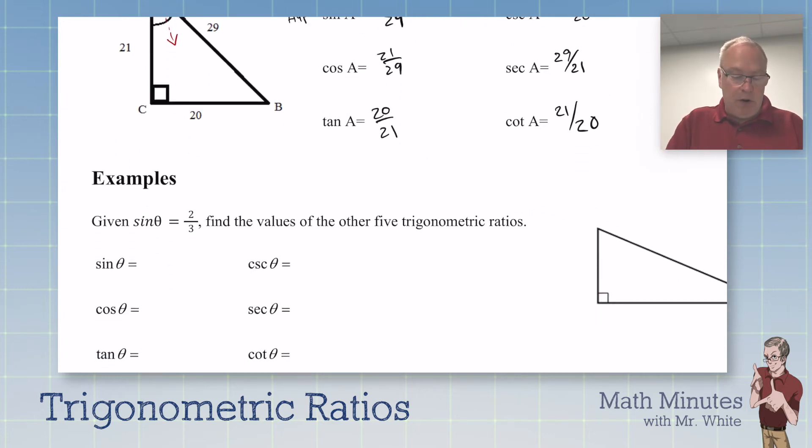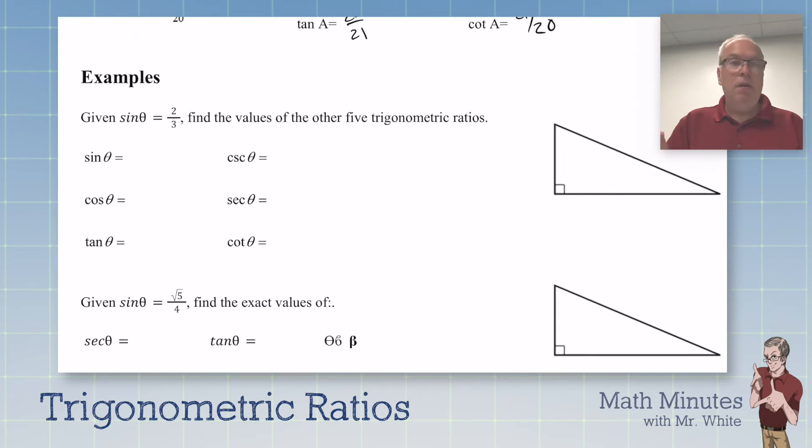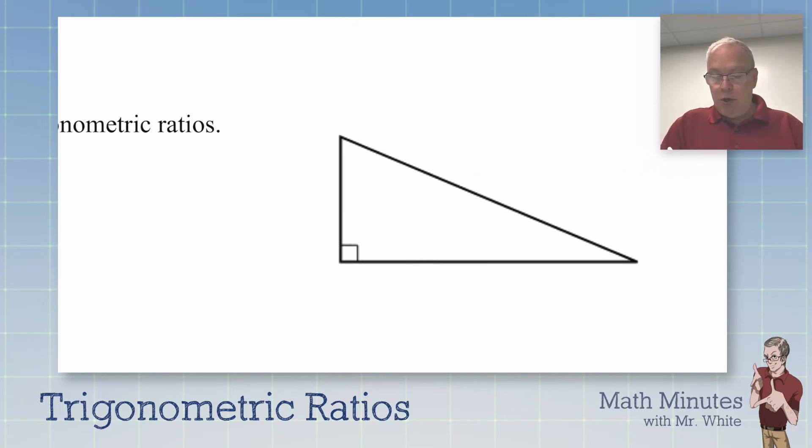So let's throw you a little bit of a curveball here. Given that sine of theta is two-thirds, find the values for the other five. We don't know where theta is, and it really doesn't matter where you put it. We'll just call that theta. So this is where our person would be sitting, right here. And we just were given that the sine is two-thirds. So that means two goes here and three would go there. We don't know how big this triangle is, but we know it's a two-to-three ratio.